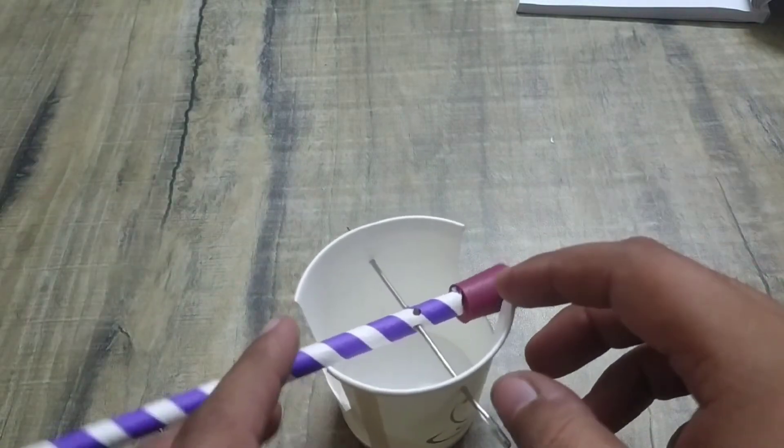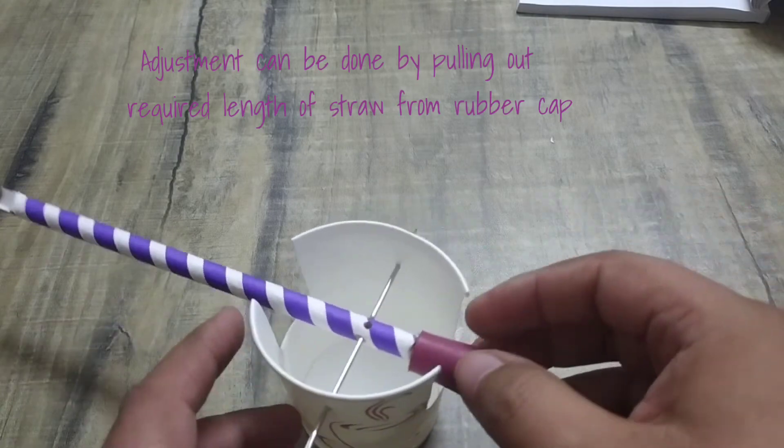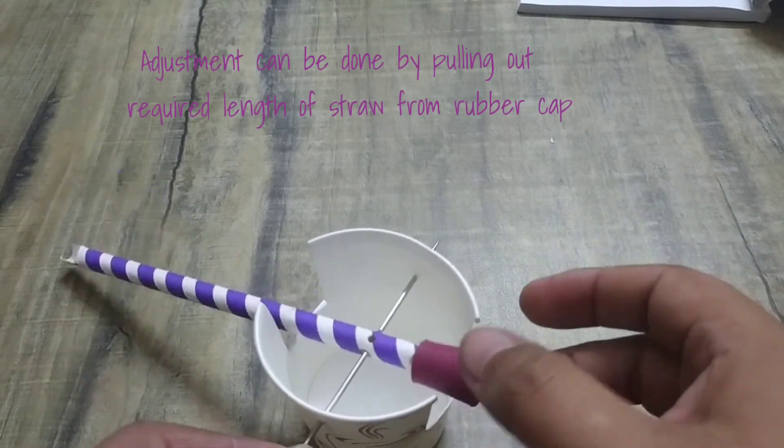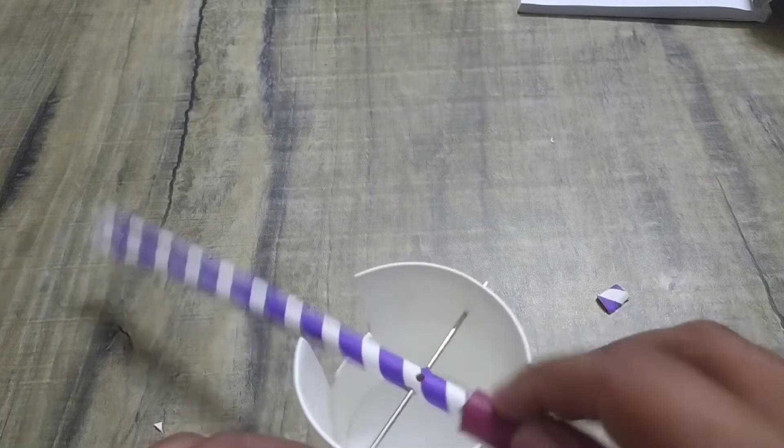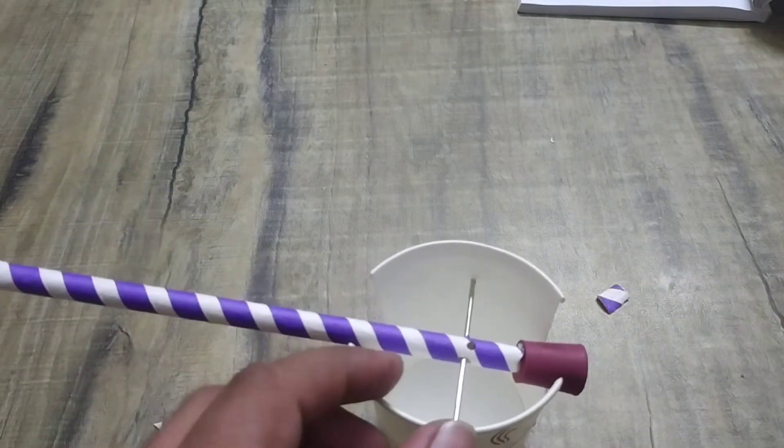Adjust the eraser head in such a way that the straw slants slightly upward. Thank you.